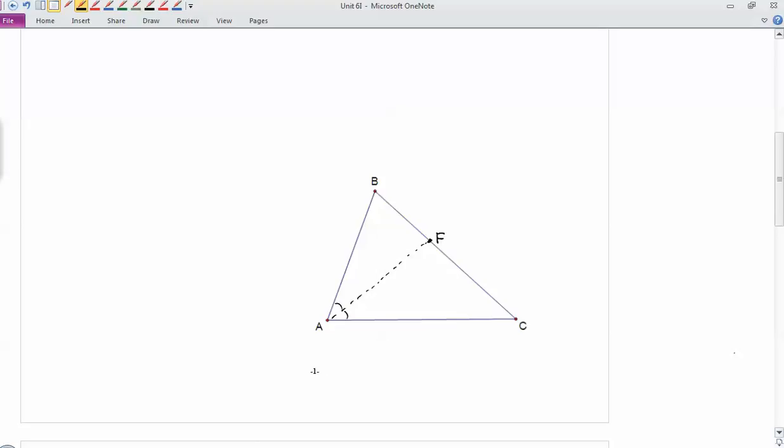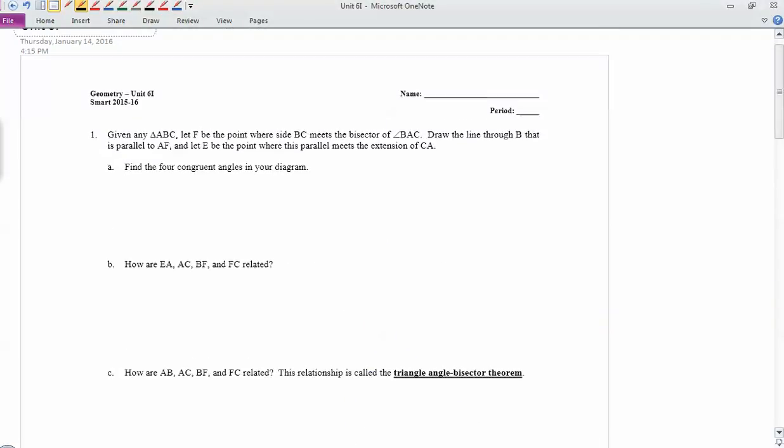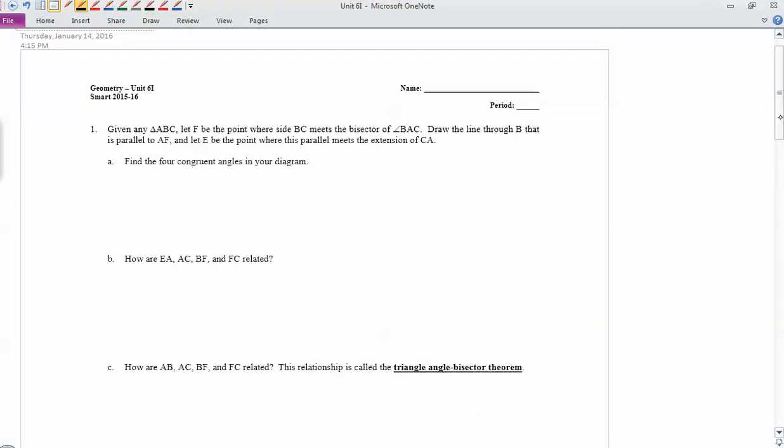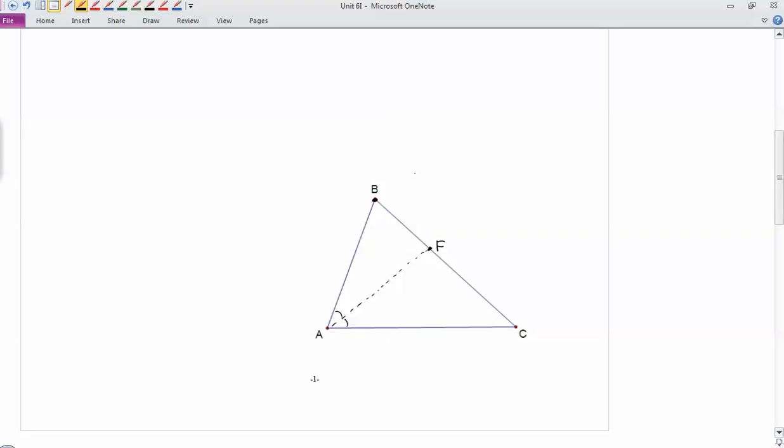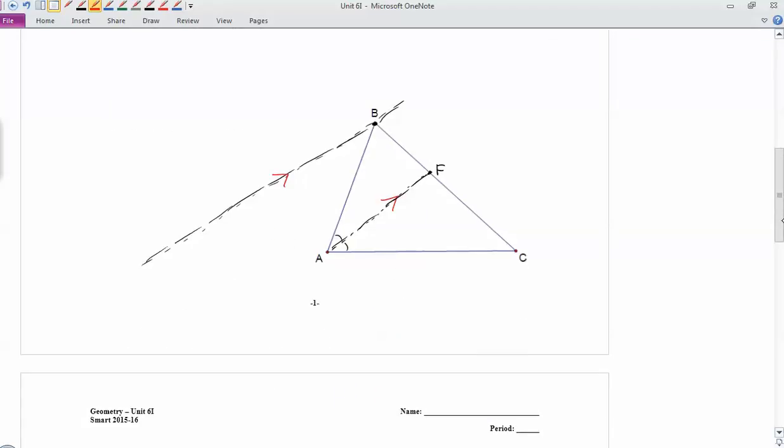So then the next part of the directions say to draw a line through B that's parallel to AF. Okay, well here's B, so I'm going to draw a line through B that's parallel to AF. So there's my line right there, parallel to this one. So let me put parallel markers on there, little arrows. And then the third thing that we have to do, it says let E be the point where this parallel meets the extension of CA. So let me extend CA out here. And E is the point where they meet.